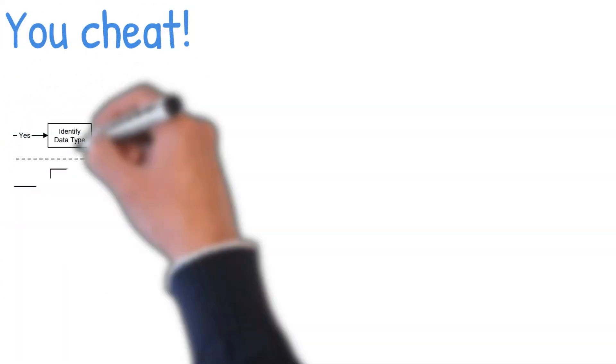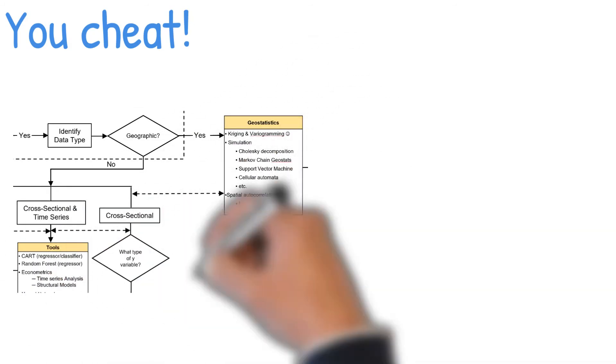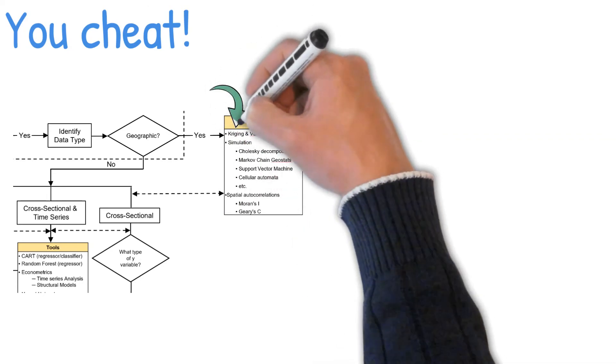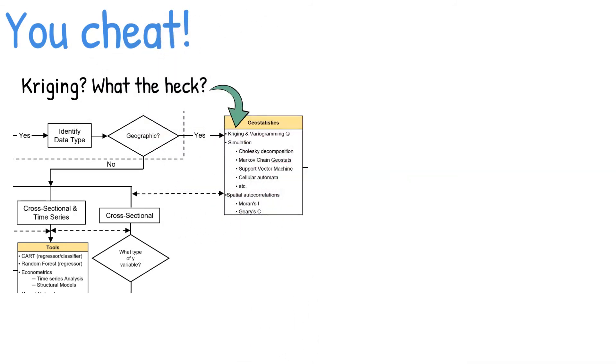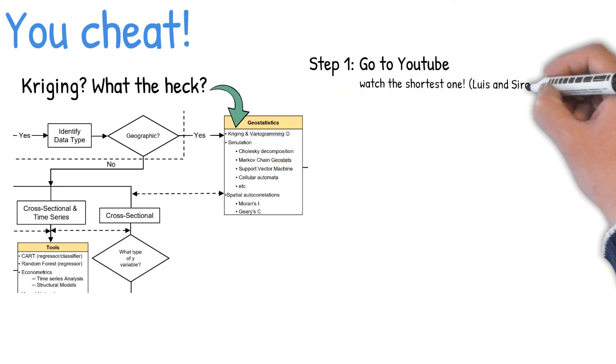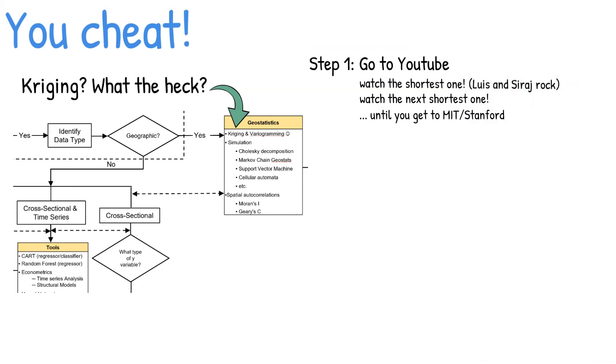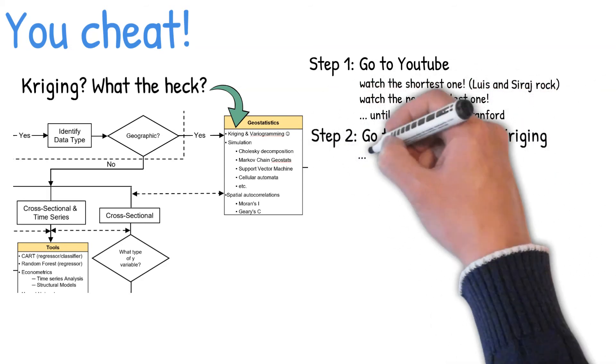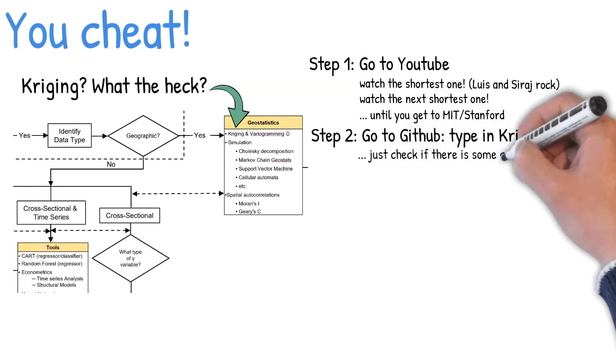How do we resolve the problem of strategic planning and jargon? My answer to that question is, well, you cheat. I'm going to give you a little bit of a hint about what the professionals do. Suppose you're in a strategic planning process, and someone says, I think we ought to use Kriging. And you're going to say, what in the world is Kriging? Before you have your next meeting, you go back to your office. Step one, you go to YouTube. You watch the absolute shortest one you can find, and then you watch the next shortest one. And you keep repeating that until you get to the MIT and Stanford videos. Step two, you go to GitHub. You simply type in the word Kriging. If there is code, then close the window. Don't analyze the code. That's for later. Just know if code is there.